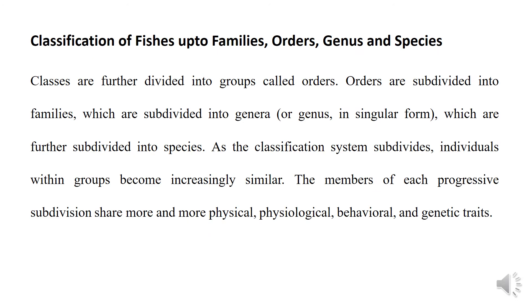Classification of fish is up to families, order, genus and species. Classes are further divided into groups called orders. Orders are subdivided into families, which are subdivided into genera, which are further subdivided into species. As the classification system subdivides, individuals within groups become increasingly similar — members of each progressive subdivision share more and more physical, physiological, behavioral and genetic traits. Scientists classify organisms into different groups like families, order, genus and species for their identification.